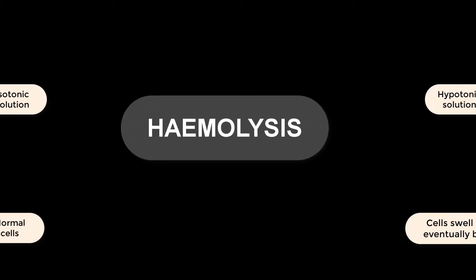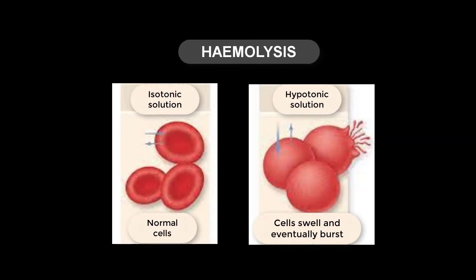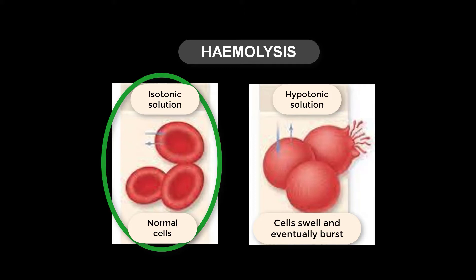I have a diagrammatic illustration here that I want us to go through to see how the process of hemolysis takes place before we move to the second one called cremation. These two diagrams show how the red blood cells appear when subjected to different treatments. The first ones have been placed in an isotonic solution, and that is the shape they will have.